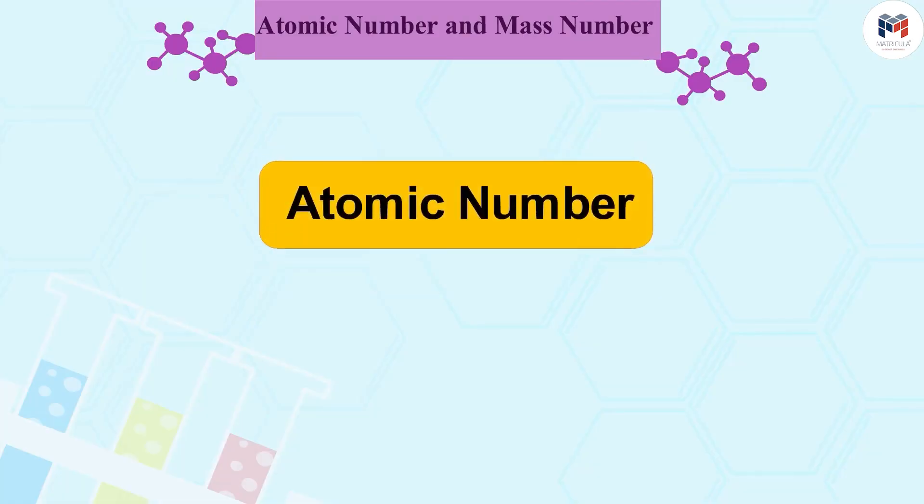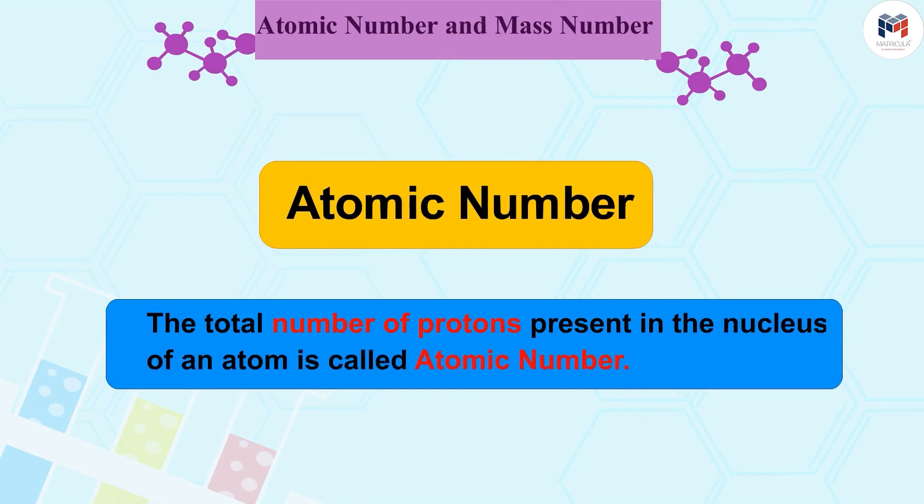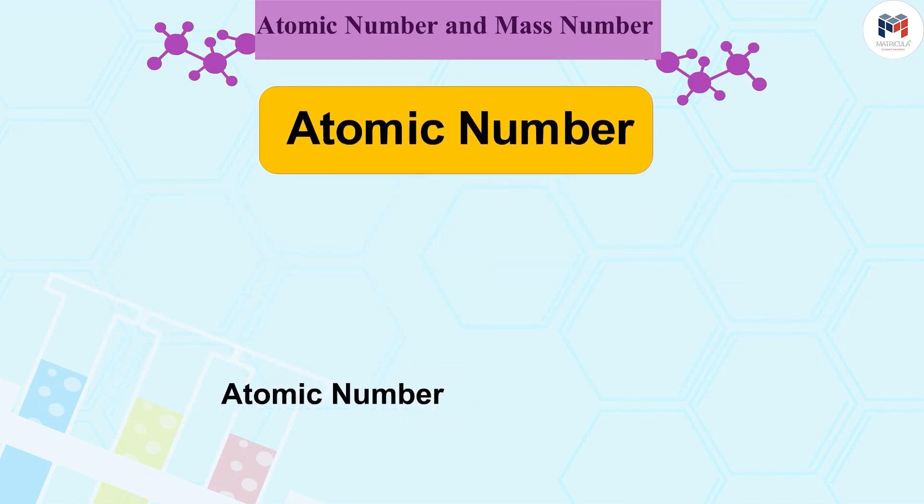Let us first learn about atomic number. The total number of protons present in the nucleus of an atom is called atomic number. It is denoted by Z. All atoms of an element have the same atomic number Z.